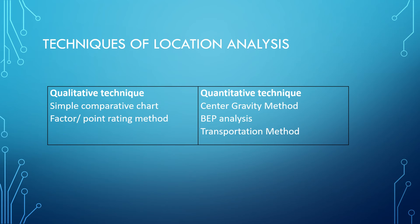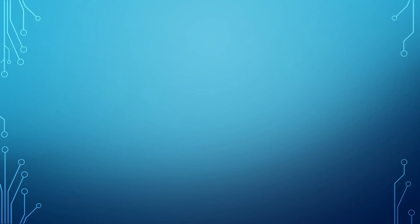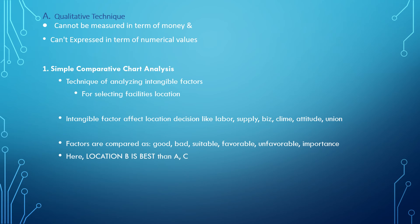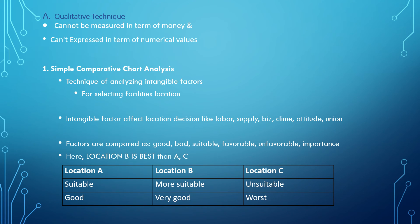There are two techniques for location analysis: qualitative and quantitative. Under qualitative techniques, there are the simple comparative chart and the factor point rating system. Under quantitative techniques, there are the center gravity method, break-even (BP) analysis, and the transportation method. Qualitative techniques cannot be measured or expressed in monetary or numerical terms. The simple comparative chart analyzes intangible factors such as labor supply, business climate, attitude, and union factors.